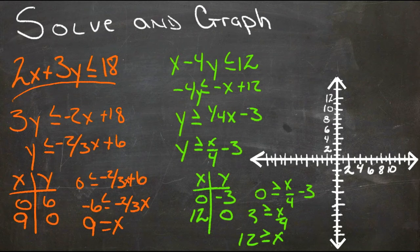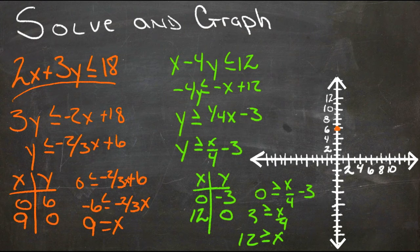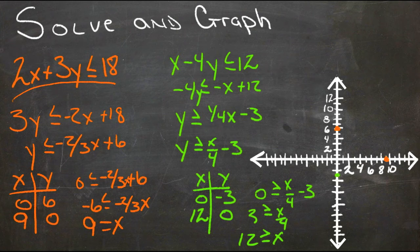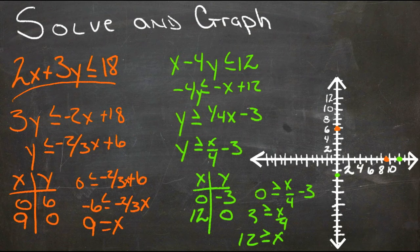So the first line has intercepts at (0, 6) and (9, 0), and the second line has intercepts at (0, -3) and (12, 0). Graphing those two lines gives us our reference for shading.